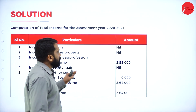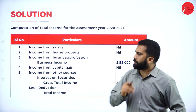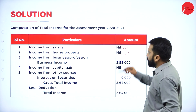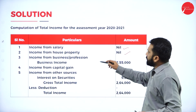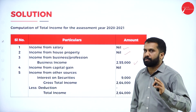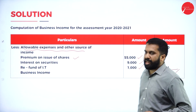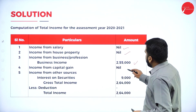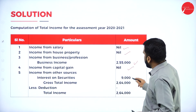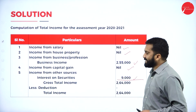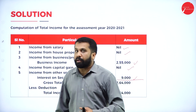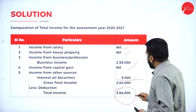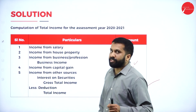After this, once you are done with the calculation, what is your total income? Income from salary — in this problem, nil. Income from house property — in this problem, nil. Income from business or profession — you got 2,55,000. Income from capital gain — nil. Income from other source — 9,000. Whatever interest you collected, that is income from other source. Total: 2,64,000. There is no deduction, nothing. Your total income is 2,64,000.